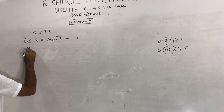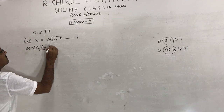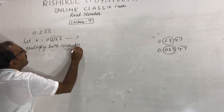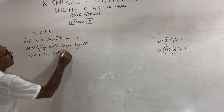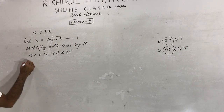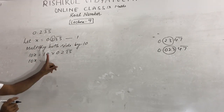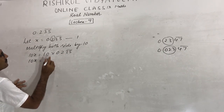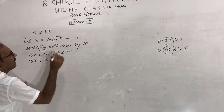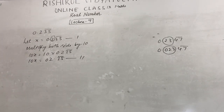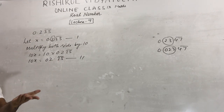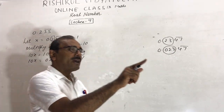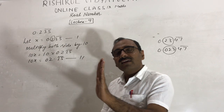So multiply both sides by 10. Then 10x equals 10 times 0.235 bar. When you multiply this number by 10, the decimal point shifts, giving 2.35 bar. This equation is clear to you. Now here two digits are repeating. As in our previous question, when two digits are repeating, multiply both sides by 100. If one digit is repeating, multiply by 10; if two digits, multiply by 100.